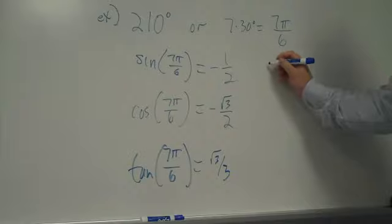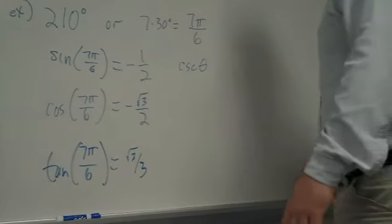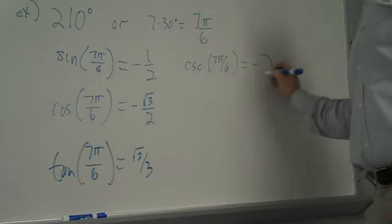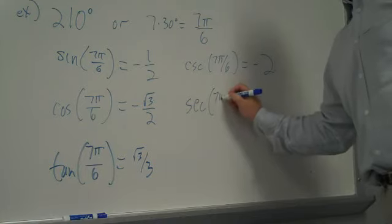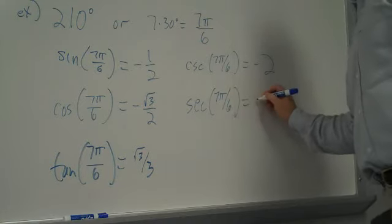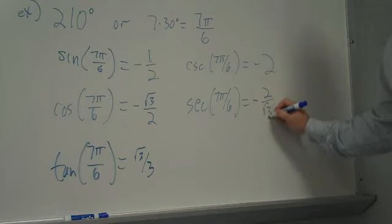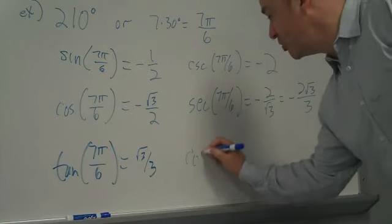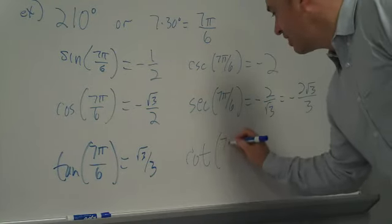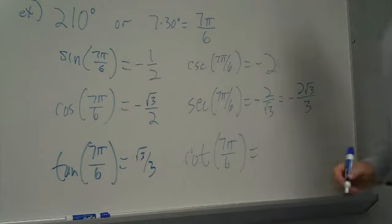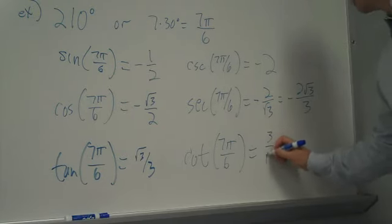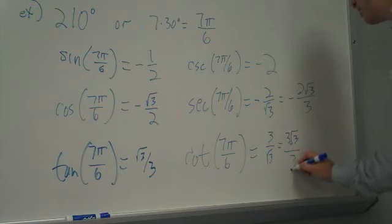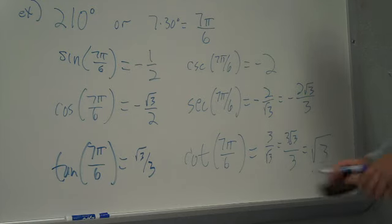And the reciprocals, the cosecant of 7 pi over 6, will be negative 2 over root 3, which we should rationalize to negative 2 root 3 over 3. And the cotangent of 7 pi over 6 will be positive 3 over root 3, which when we rationalize it, we'll get 3 root 3 over 3, or just positive square root of 3.